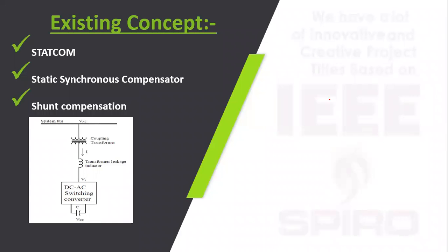The existing concept, STATCOM, is a Static Synchronous Compensator. It is connected to the AC grid in between the transmission lines. In case any problem such as voltage sag or voltage swell occurs, STATCOM is mainly focused for reactive power compensation.